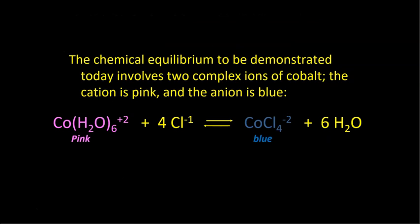We're going to look at a chemical equilibrium using two complex ions of cobalt. The cobalt hexahydrate cation — cobalt with six waters attached — is a plus-two cation and is pink. The other form, cobalt chloride minus two, is an anion, and when in this form it is blue. The reaction is reversible and involves chloride ions as reactants on the left side and water as a product on the right side.